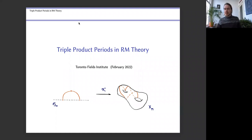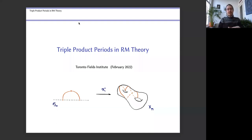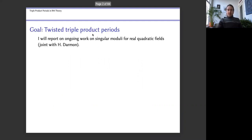Today, since it's evening here and I'm having some tea, I thought it might be nice to give a slightly more informal talk aimed at discussing recent progress in joint work with Darmon on rudiments that go towards the theory of real multiplication, whose aim is to construct singular moduli for real quadratic fields enjoying many of the same properties as singular moduli for imaginary quadratic fields going back to the 19th century.